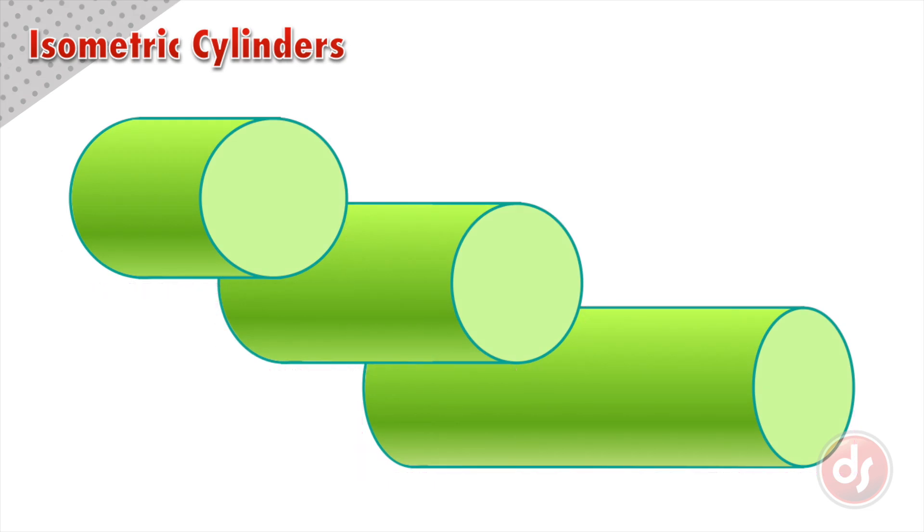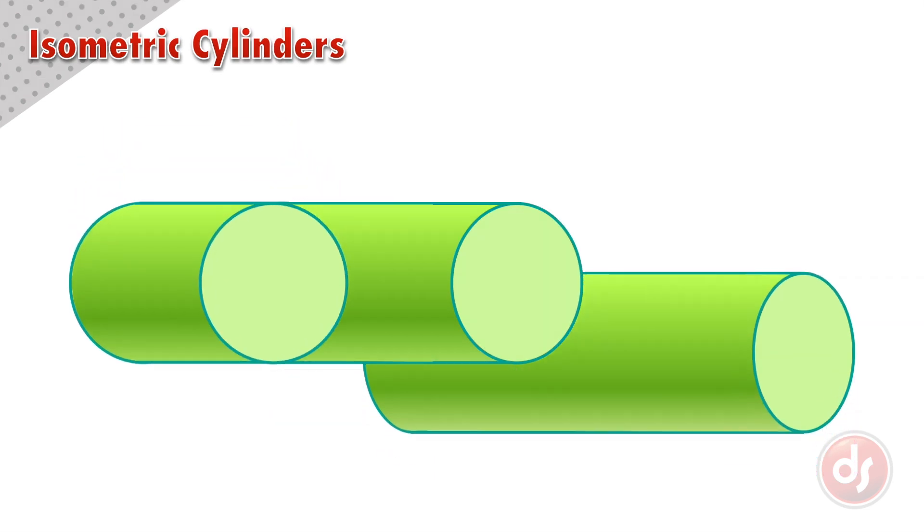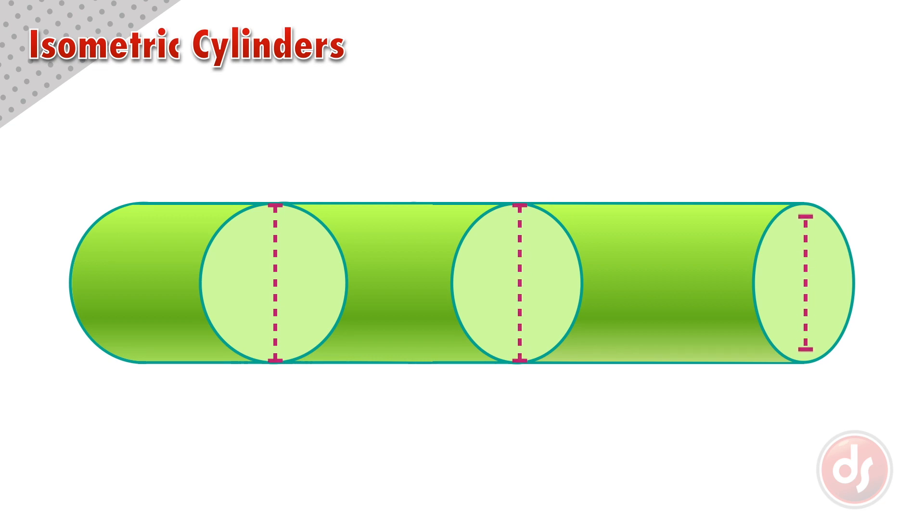Now if we line the different stages up, we can see that the major axis has stayed the same height, but the minor axis has changed as it faced us.